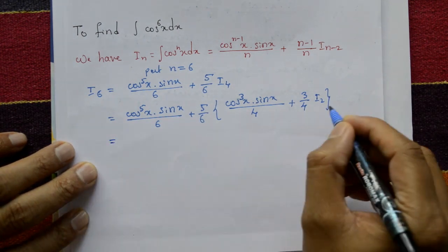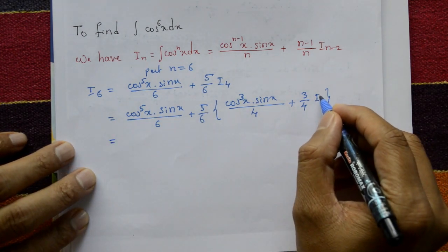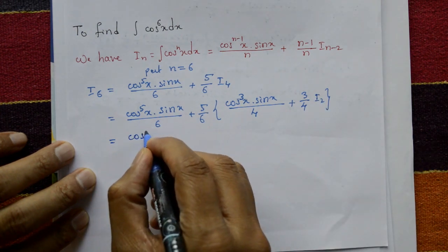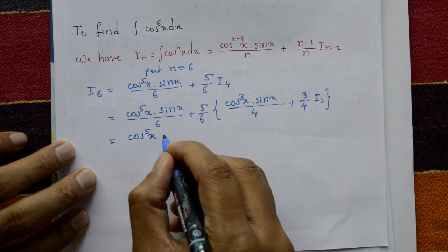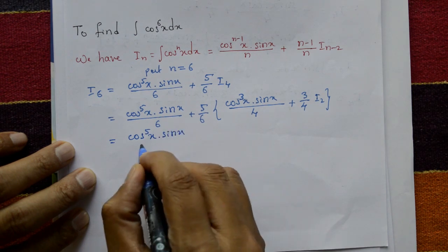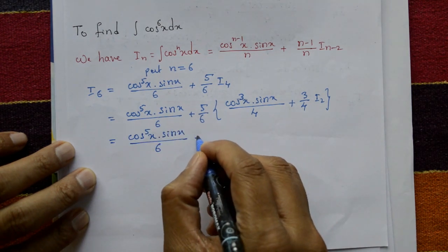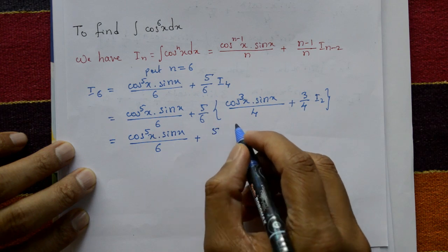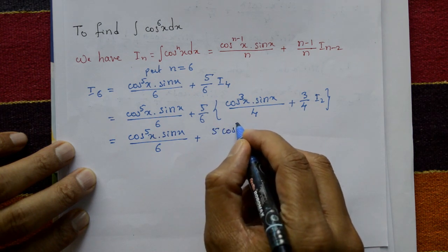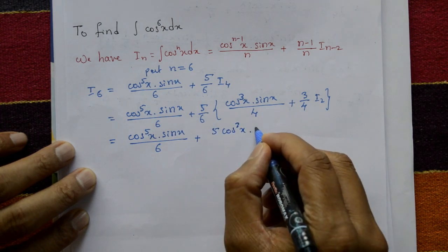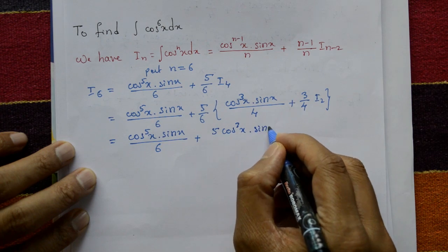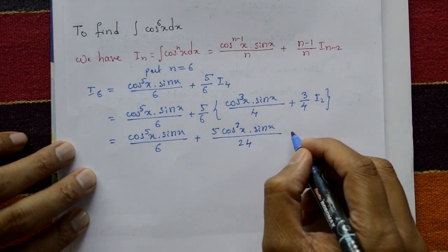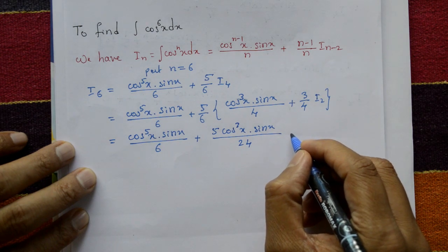Again, find what is I_2. The first term has no change: cos^5 x times sin x divided by 6. Opening the bracket: 5 times cos^3 x times sin x divided by 24, plus cos^3 x times sin x divided by 24.